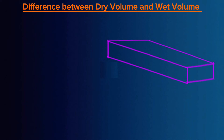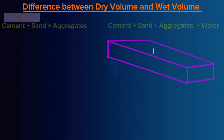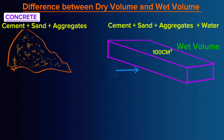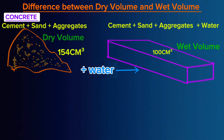For example, if we want to cast concrete for a slab of 100 cubic meters volume, the concrete we cast is wet volume. Therefore, what we mix before adding water should be 154 cubic meters, such that after adding water, we remain with only 100 cubic meters.